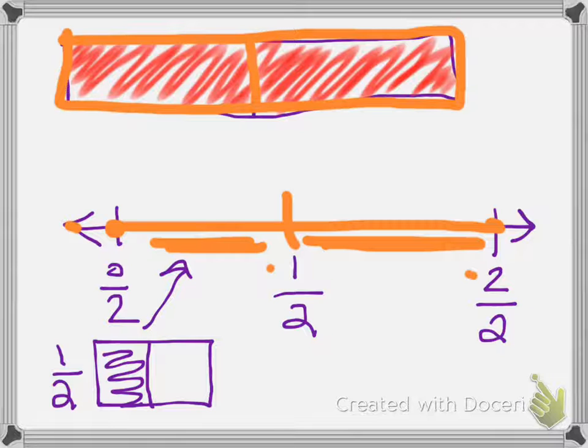If I'm curious, how can I do this another way, or show half another way, I can draw my same box, and I can take my half and split it into additional portions.